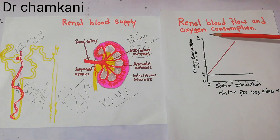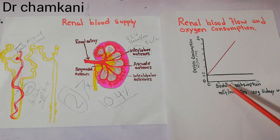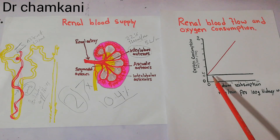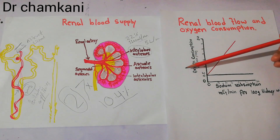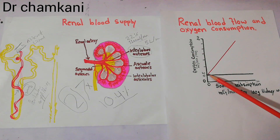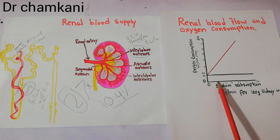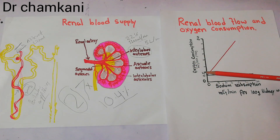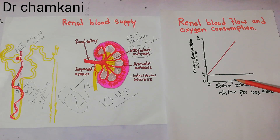Looking at a graph plotting sodium reabsorption in milliequivalents per minute per 100 grams of kidney against oxygen consumption: as sodium reabsorption increases — from 5 to 10 to 15 milliequivalents per minute — oxygen consumption also increases. Conversely, when sodium reabsorption starts decreasing, oxygen consumption also starts decreasing.